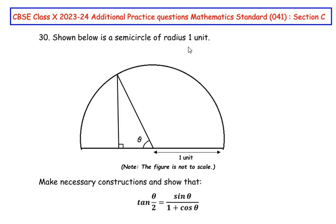Shown below is a semicircle of radius 1 unit. Make necessary constructions and show that tan(θ/2) is equal to sinθ over 1 plus cosθ.